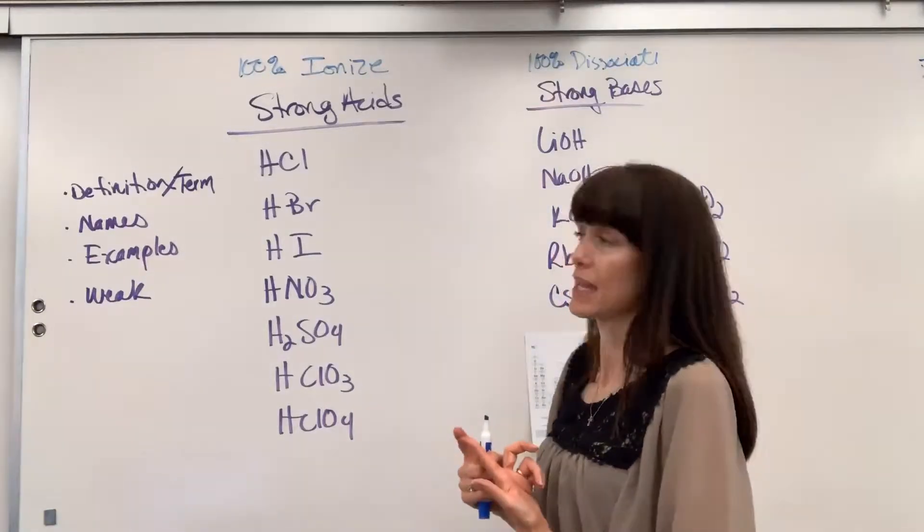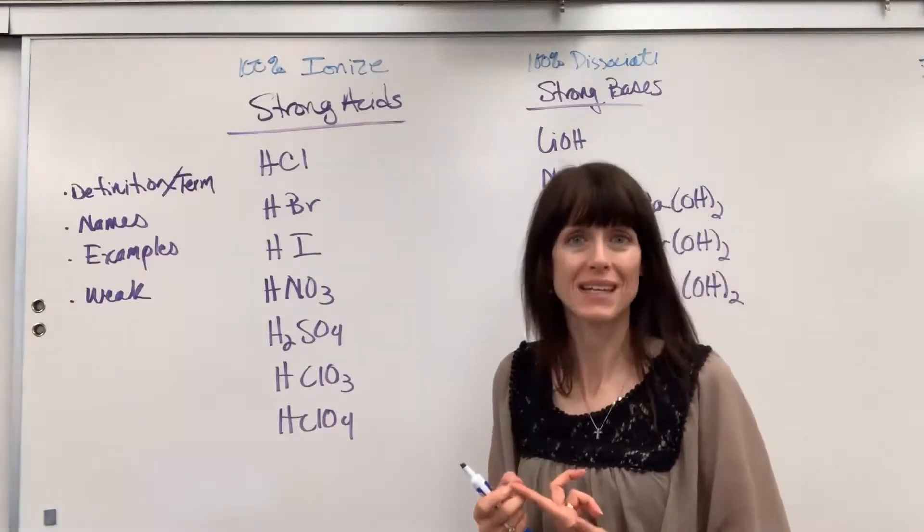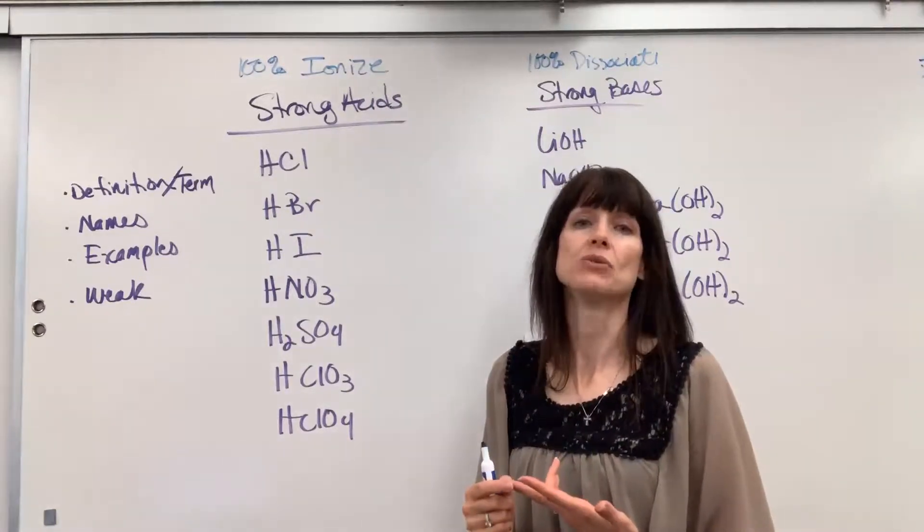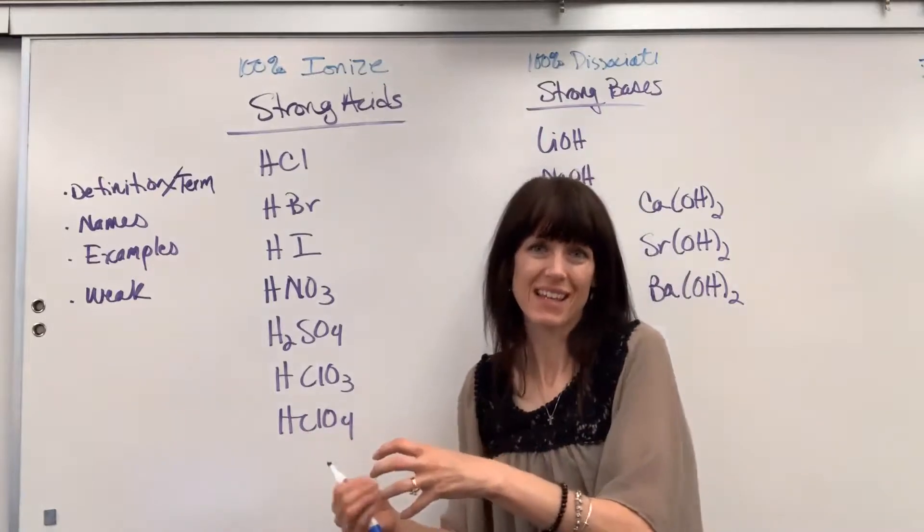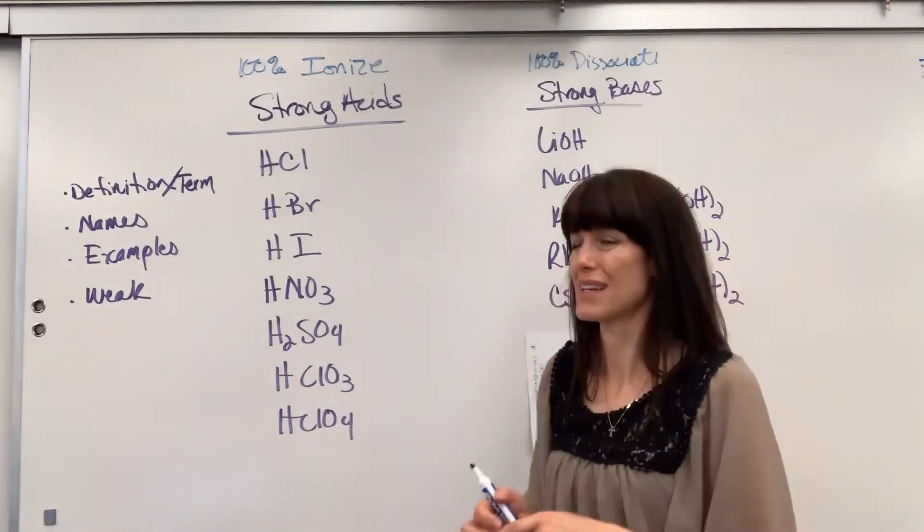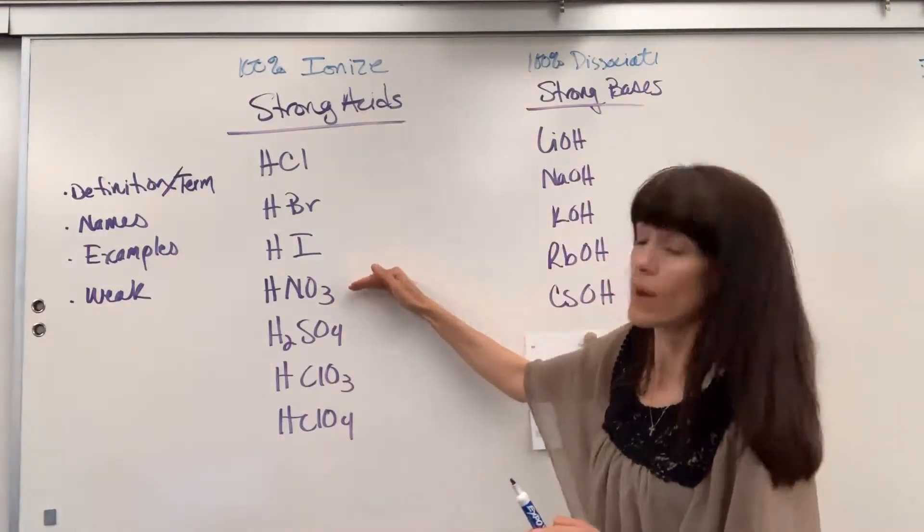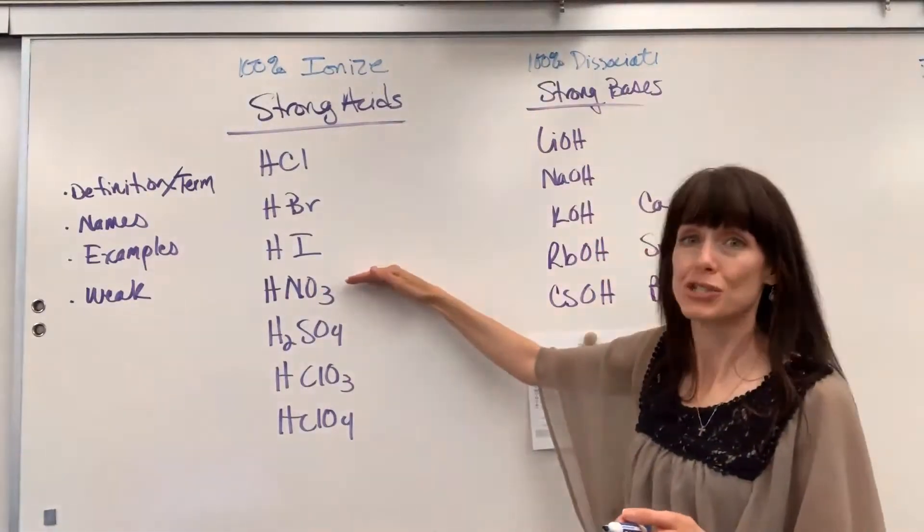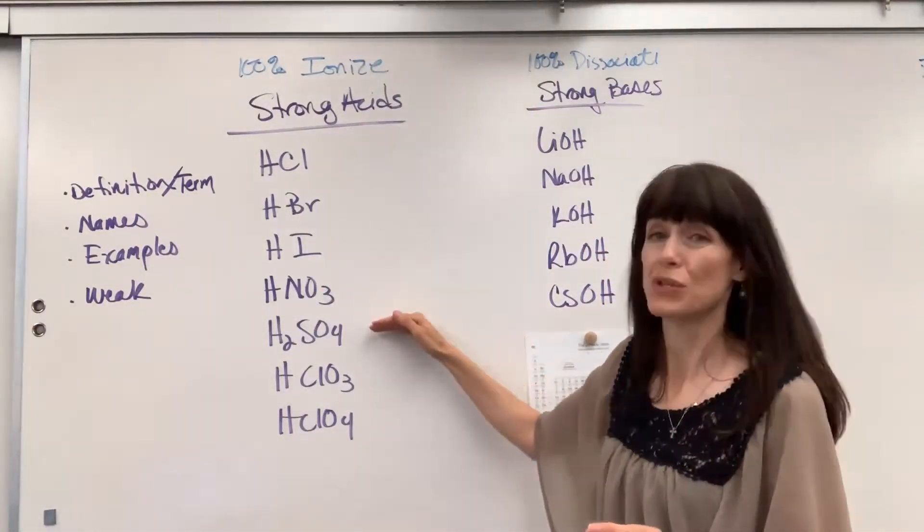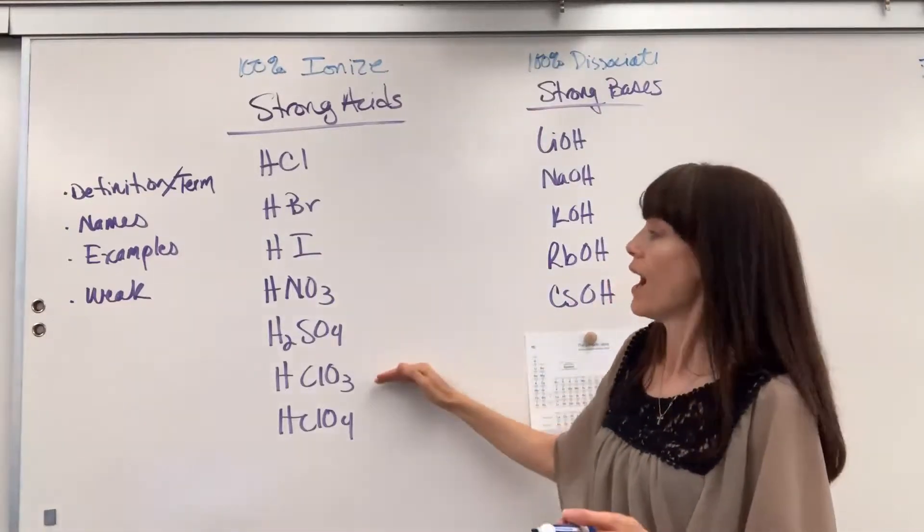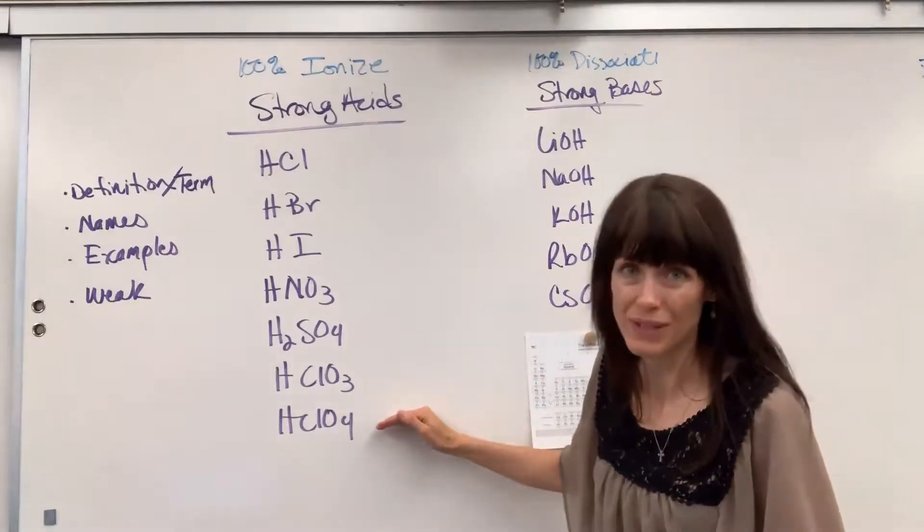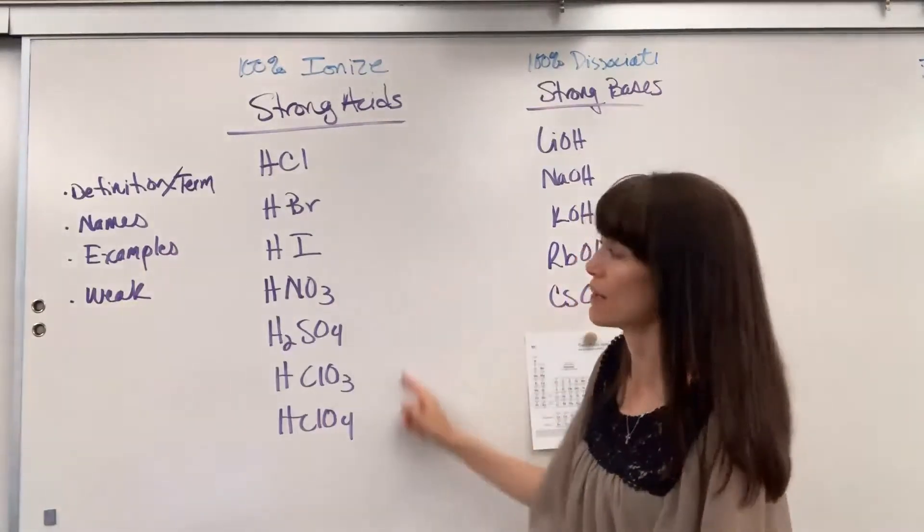If the polyatomic ends in ate, you change it to ic acid. If the ending ends in ite, you change the ending to ous acid. I ate too much. I got sick. It takes two of us to fight. The two sulfuric acid, oh, excuse me, chloric acid and perchloric acid. So you will want to have those seven memorized.